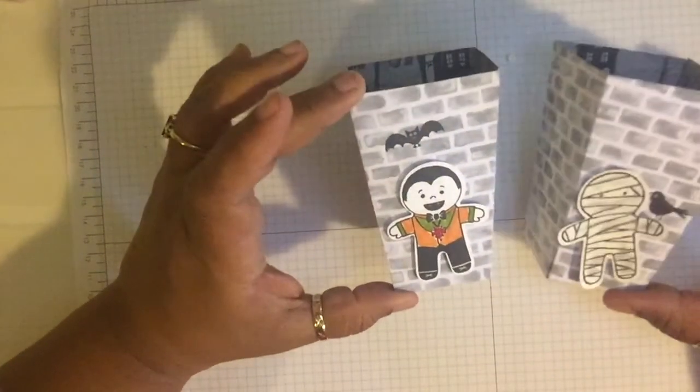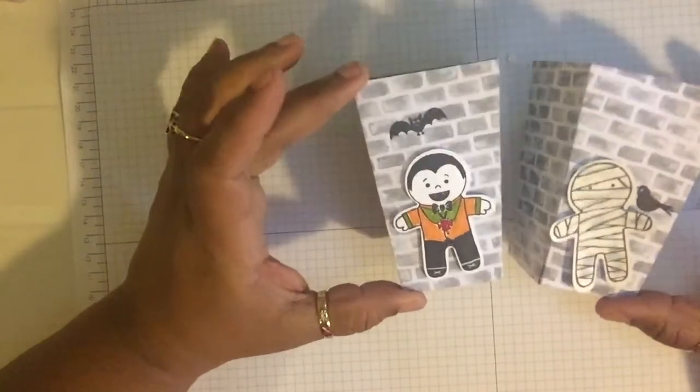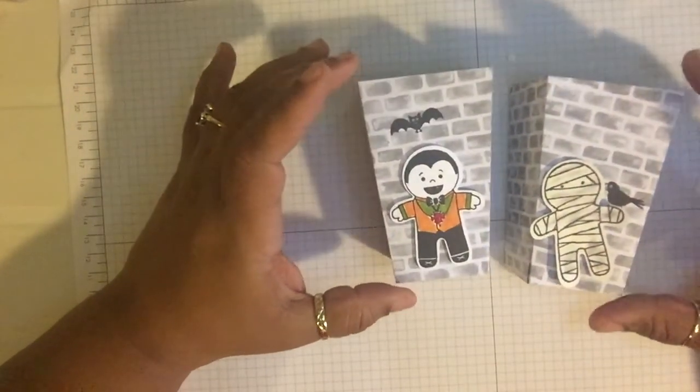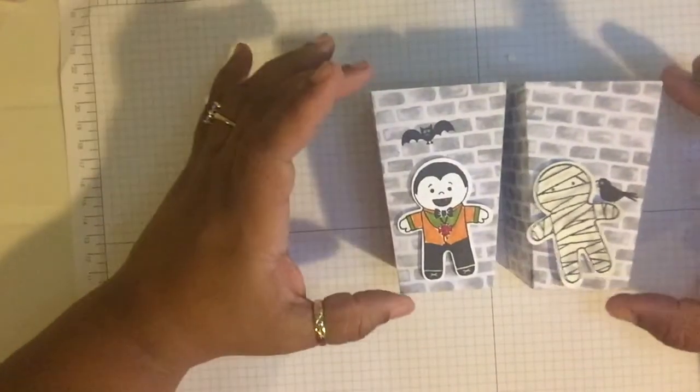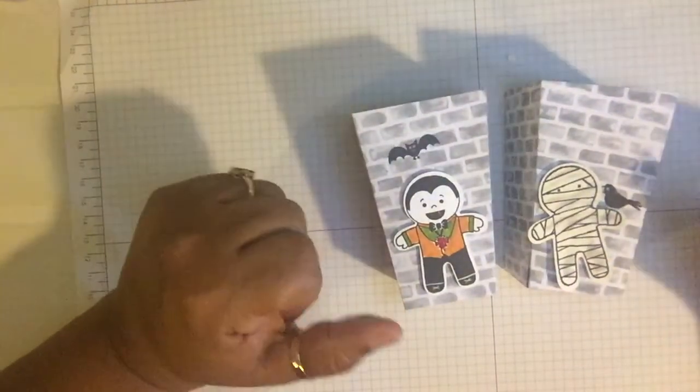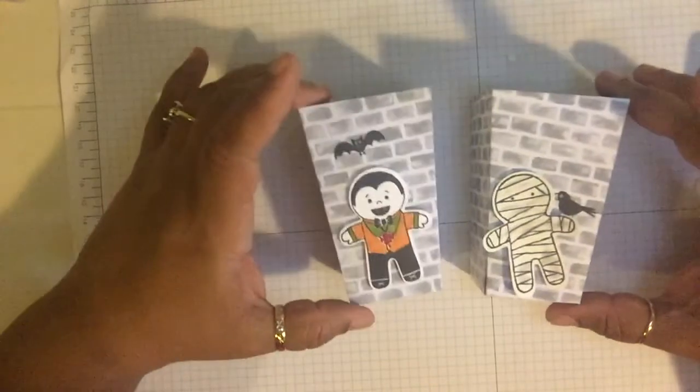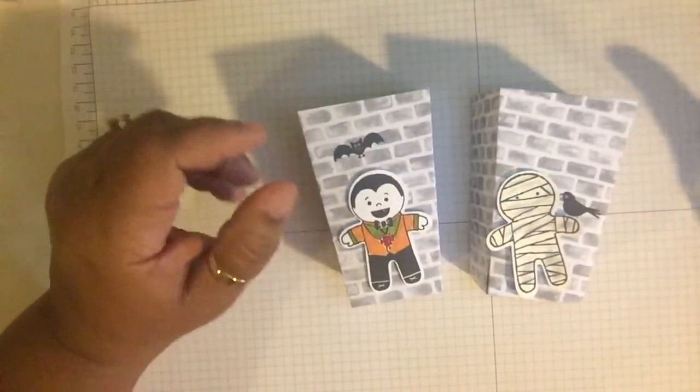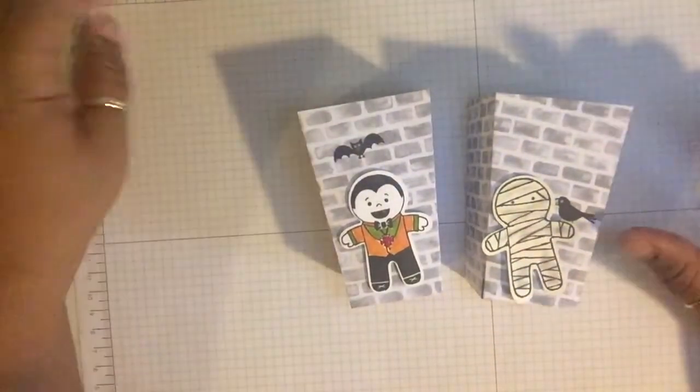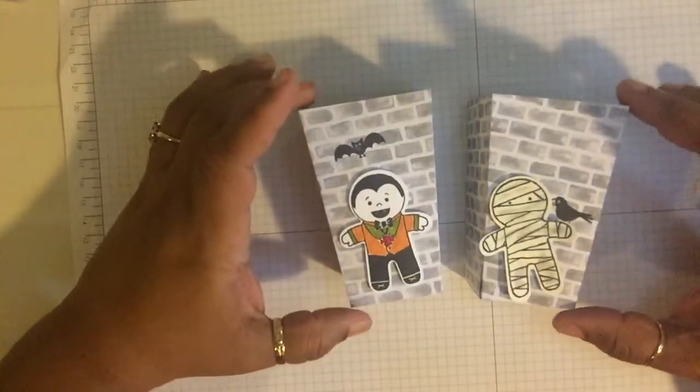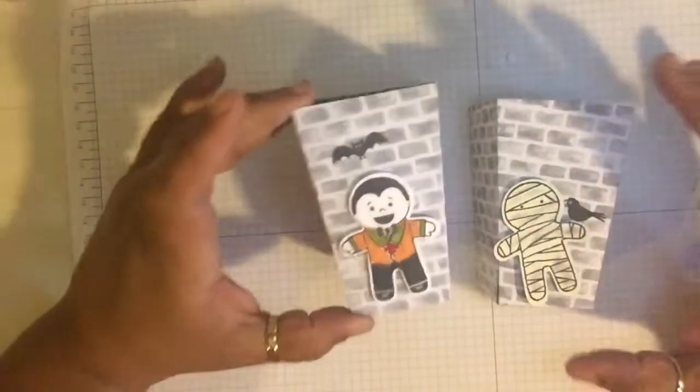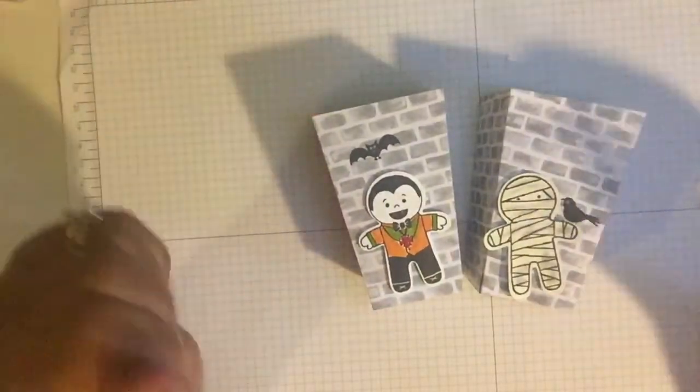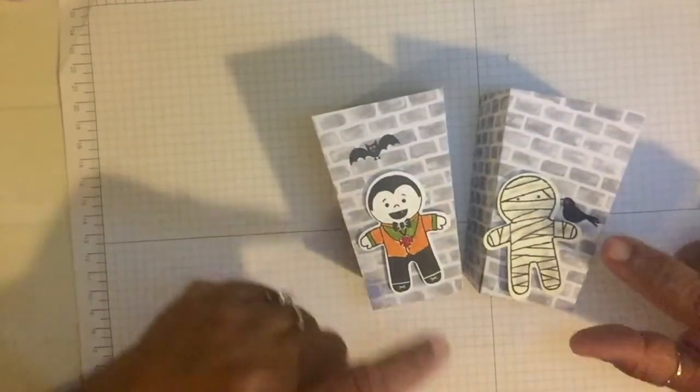And again, this took one whole sheet of 12 by 12 designer series paper. Or you can actually use an eight and a half by 11, a regular piece of cardstock to do that and then design it. But those are my projects for today. Really cute, really simple and quick to do. And again, you can put all kinds of things in there. You can put some chocolates, Halloween candy or anything.